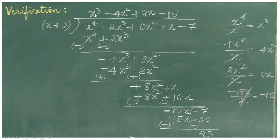Multiplying x plus 2 into x cube gives x raise to 4 plus 2x cube. Subtracting by changing sign: x raise to 4 minus x raise to 4 gets cancelled. Minus 2x cube minus 2x cube gives minus 4x cube. Bringing down 0 into x square. Now dividing minus 4x cube by x gives minus 4x square, the second term of the quotient.